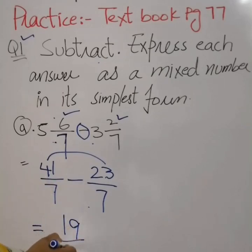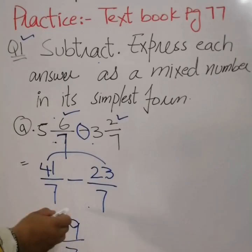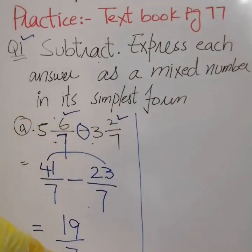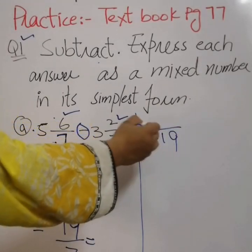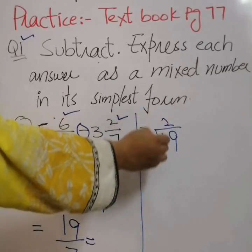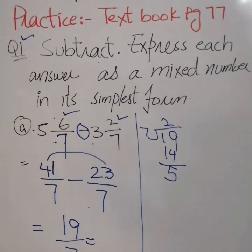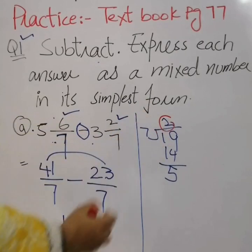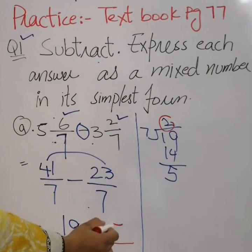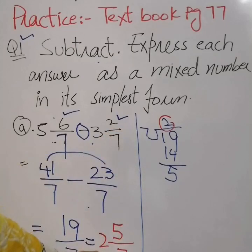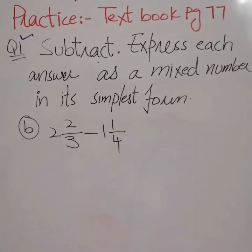We get 19 over 7. Now we have an improper fraction in which the numerator is greater than the denominator. We simplify it by dividing 19 by 7. 7 times 2 is 14, remainder 5. The quotient becomes the whole number, the remainder becomes the numerator, and the denominator remains the same. So the answer is 2 whole 5 over 7.